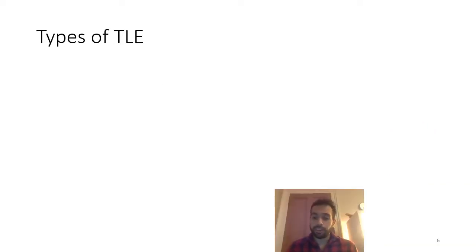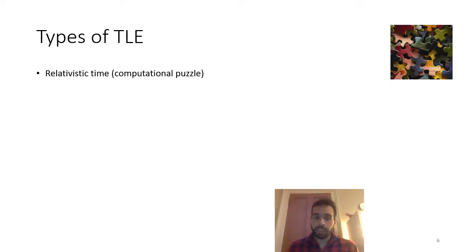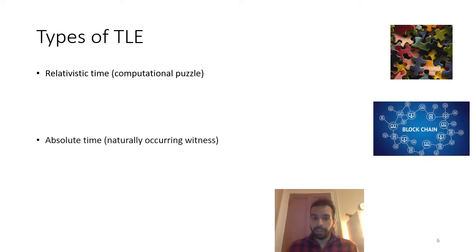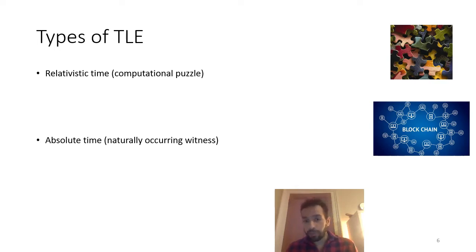There are certain types of time-lock encryption. The first is called relativistic time and is based on a computational puzzle, so everyone that solves the puzzle can retrieve the initial message. The second is called absolute time time-lock encryption, where a witness naturally occurring from, for example, the blockchain, and with a witness-based encryption scheme, someone can encrypt and decrypt the message.